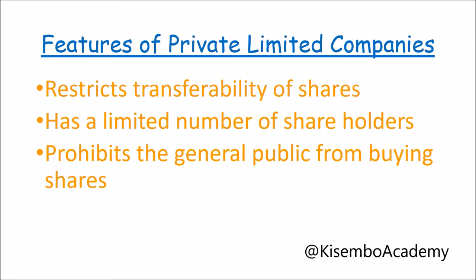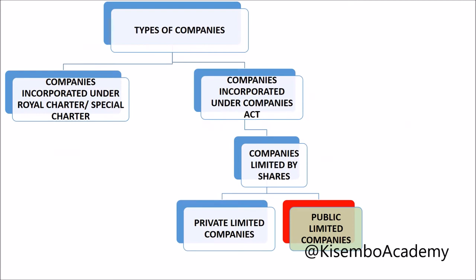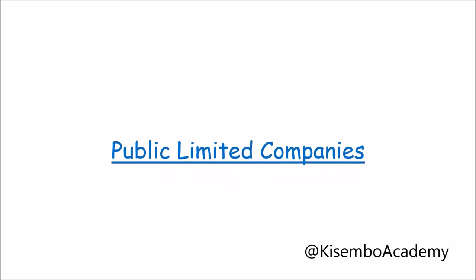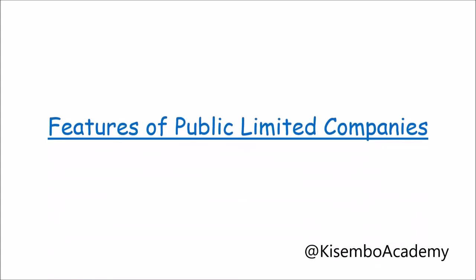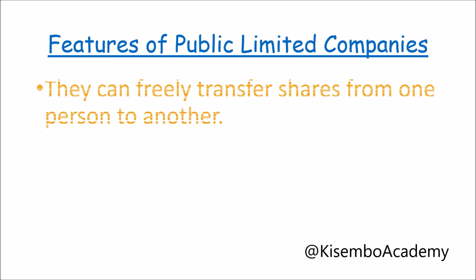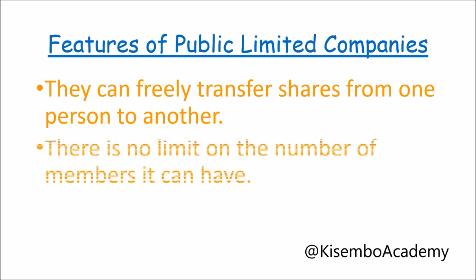Examples in Uganda include Mukwano Group of Companies, Nile Breweries, and Monitor Publications. Public limited companies, by their articles of association, can freely transfer shares from one person to another — there is no restriction on the transfer of shares. There is also no upper limit on the number of members, with a minimum of seven. They invite the general public to subscribe to shares and debentures, and they must hold a statutory meeting and file a statutory report.